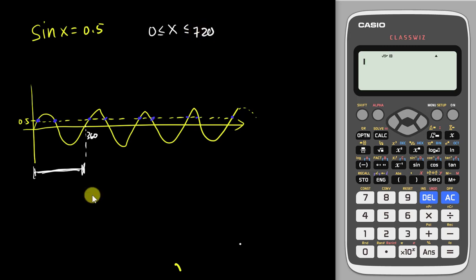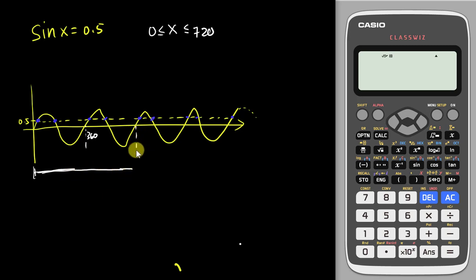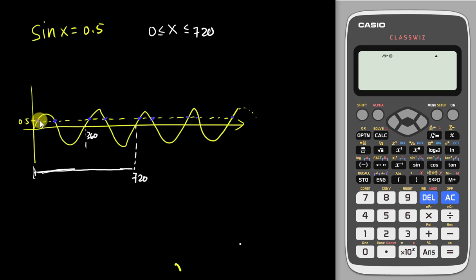If the question changes the range to 720, then you need to find the angle from 0 up to 720. So how many blue dots do you have when sine x equals 0.5? You have 1, 2, 3, 4 — you should have 4 answers.